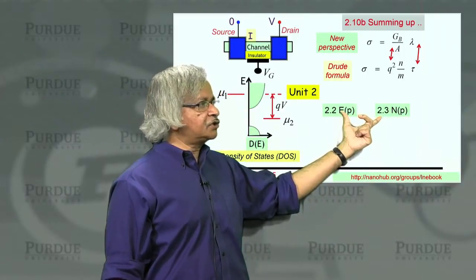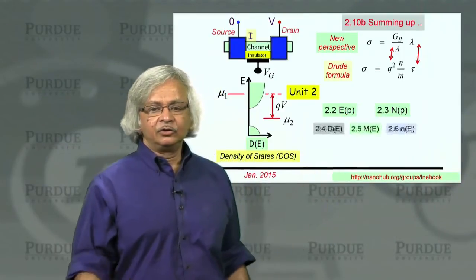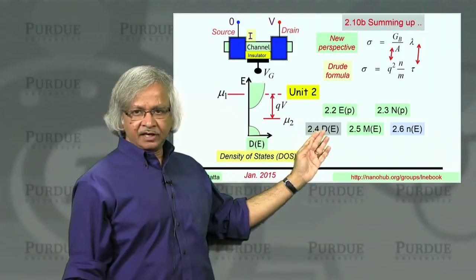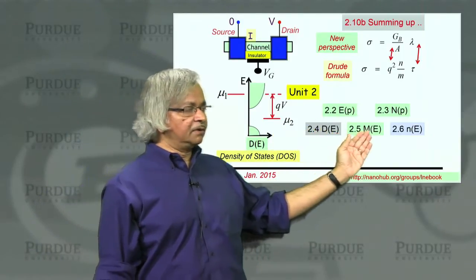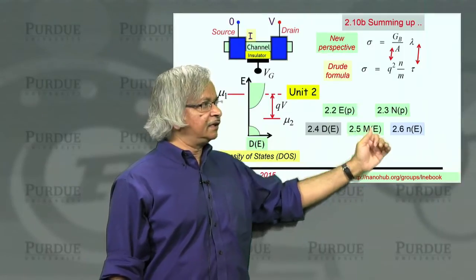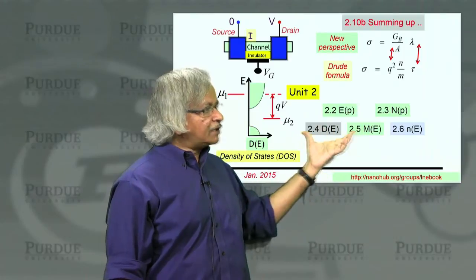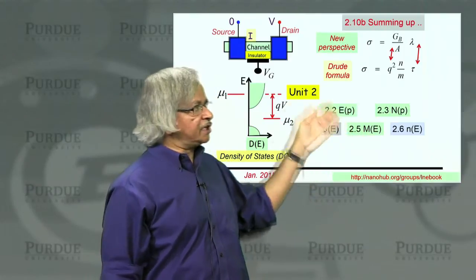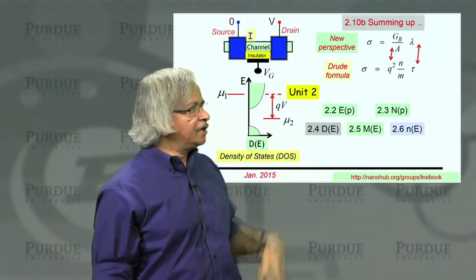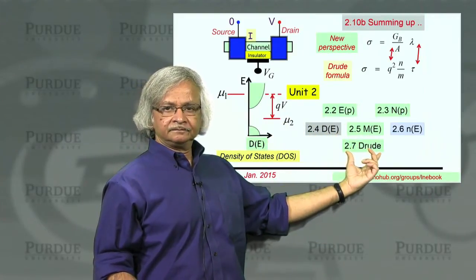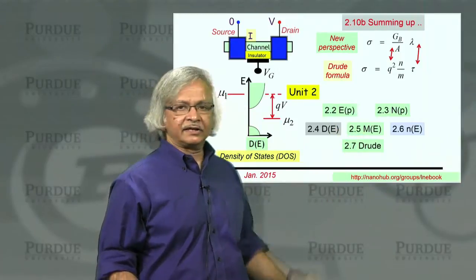And that's what leads to this function here. Once you have these two inputs, you could combine it to get these various quantities of interest. Namely, density of states, that's lecture four. Number of modes, lecture five. Electron density, that's number six. And once you had these quantities, which enter the expression for conductivity, we were ready to connect it to the Drude formula. So that's what we did in lecture seven.